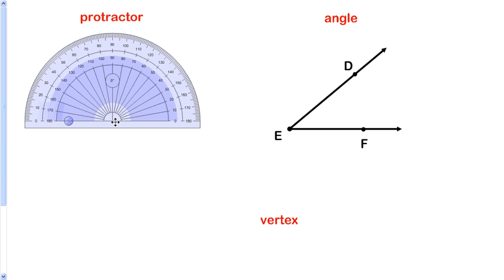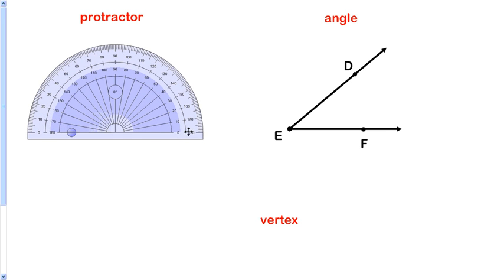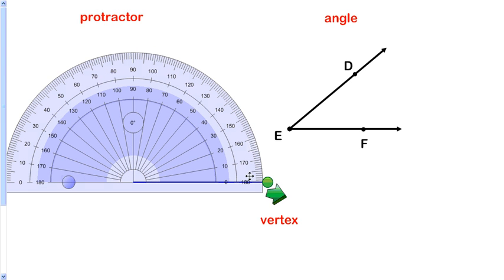Here are some important terms. Obviously this is our protractor and we've got all of the numbers that you need to know for measuring degrees around the outside. But just be careful, remember that the numbers go in both directions depending on which way you're measuring the angle.